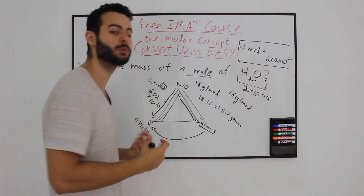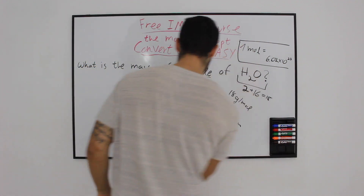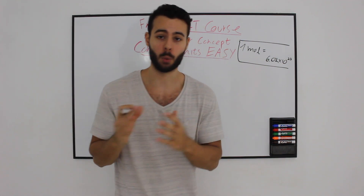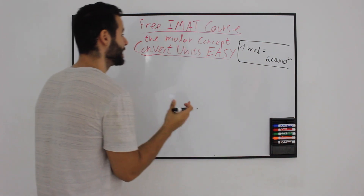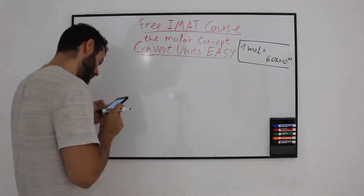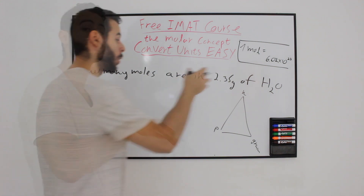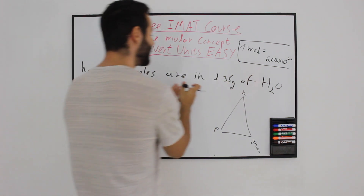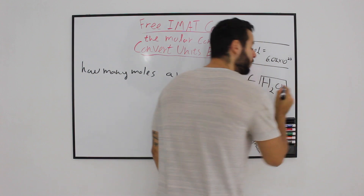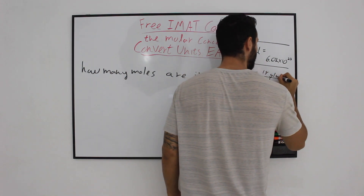I'm going to answer another IMAT question to show another concept of how to solve these kinds of problems. By the way, the next video will cover how to apply the molar concept to solving and balancing chemical equations. The next question is a great example of going the other way: how many moles are in 2.35 grams of H2O? The first thing you always need to do is find the molecular mass of the molecule — H2O is 18 grams per mole.